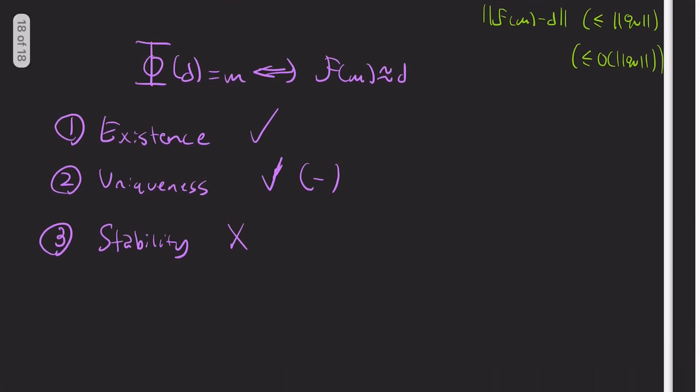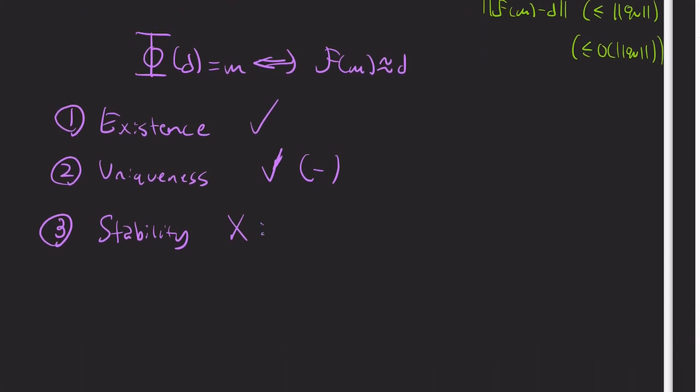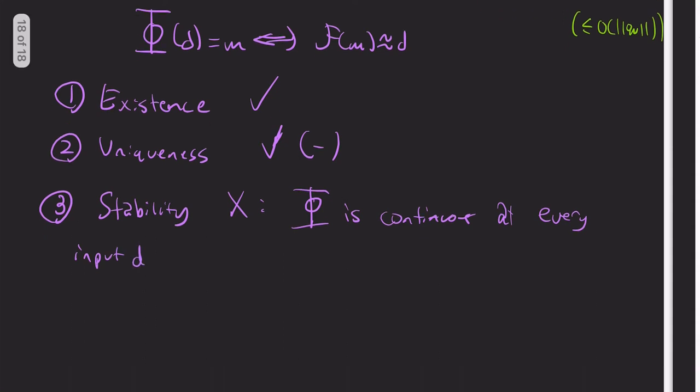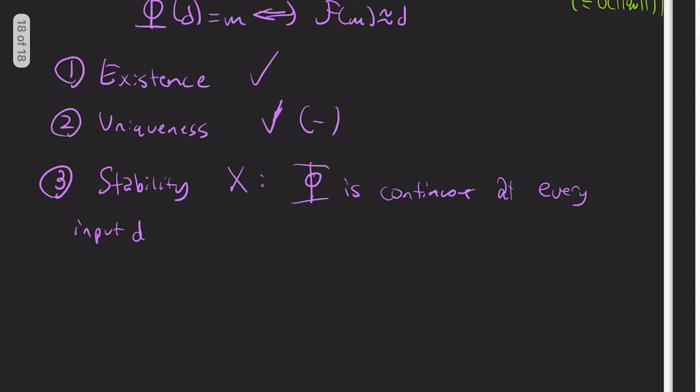but typically we don't have stability. And stability can be formulated as phi is continuous for every input d or at every input d.